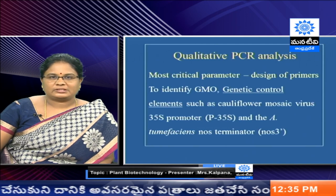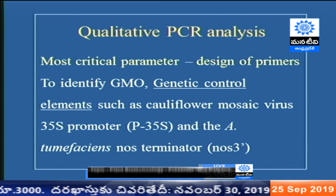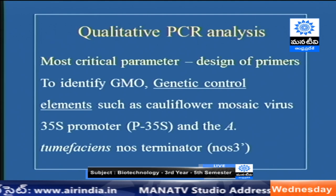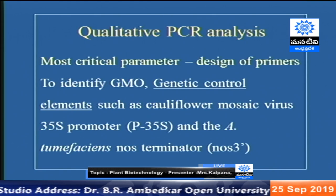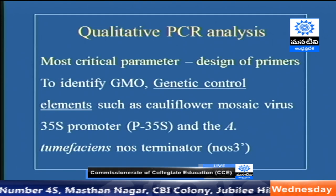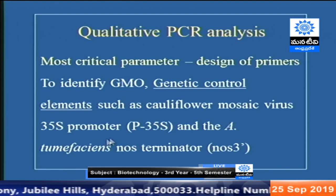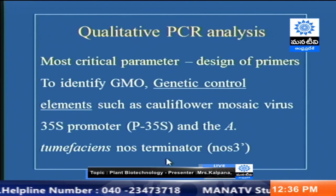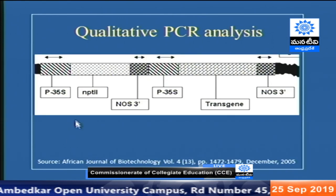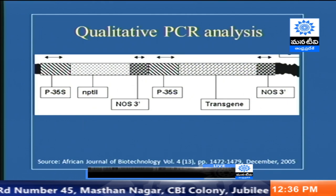For qualitative PCR analysis, the designing of primers is the most critical parameter. If anything goes wrong while designing primers, even though the gene is present in the plant genome, it will not be amplified. To identify GMOs, we generally use genetic control elements such as the cauliflower mosaic virus 35S promoter (P35S) or the Agrobacterium tumefaciens NOS terminator. If we use these two, we can determine whether the genetic control elements are present in the particular plant.